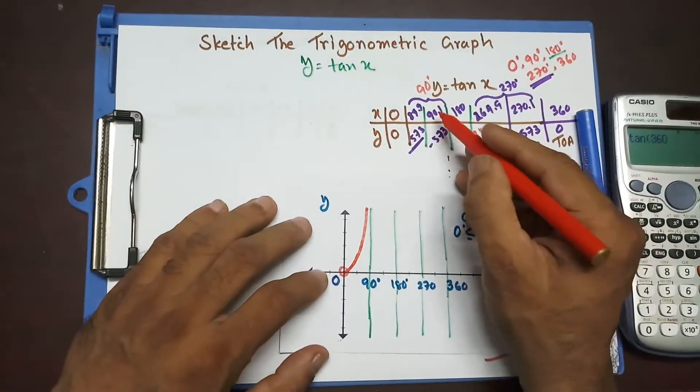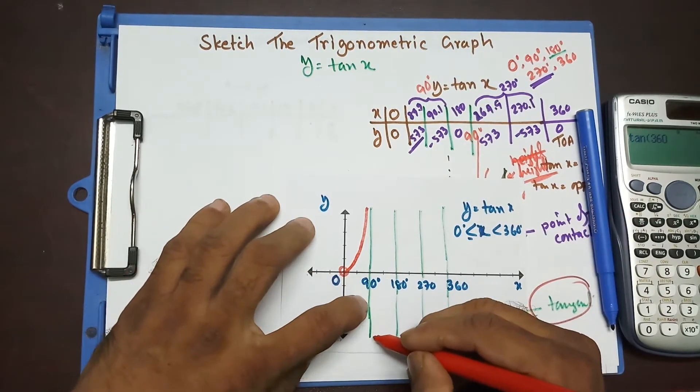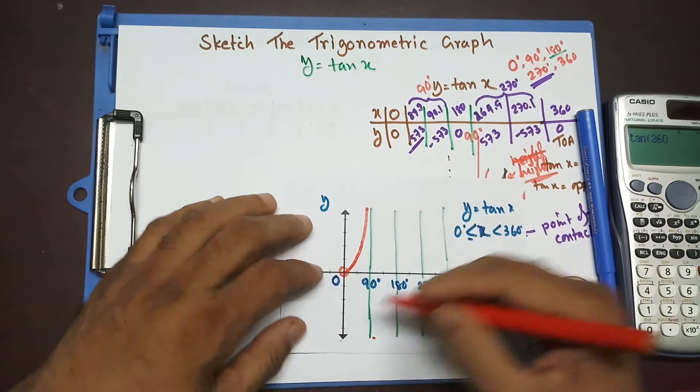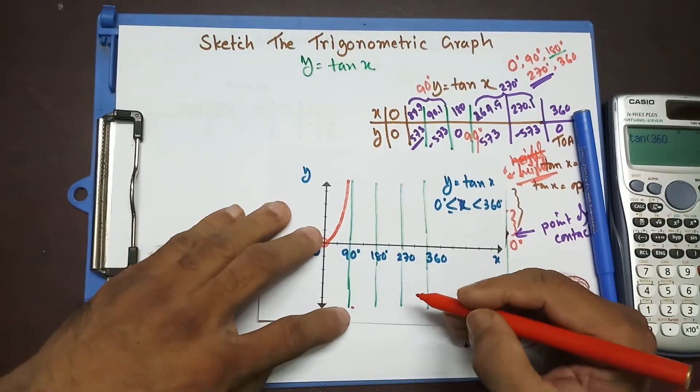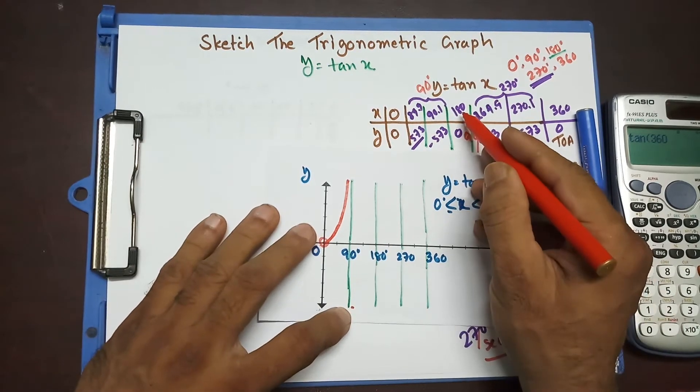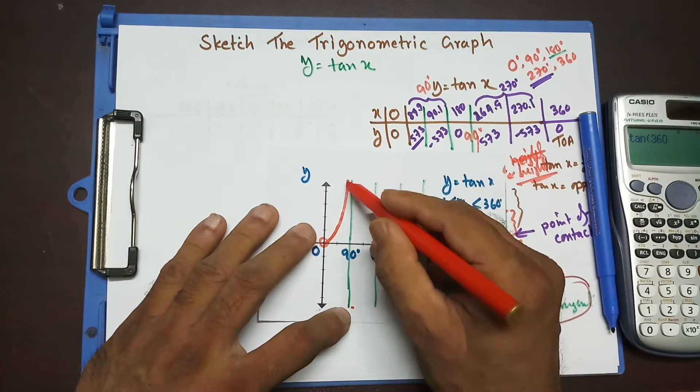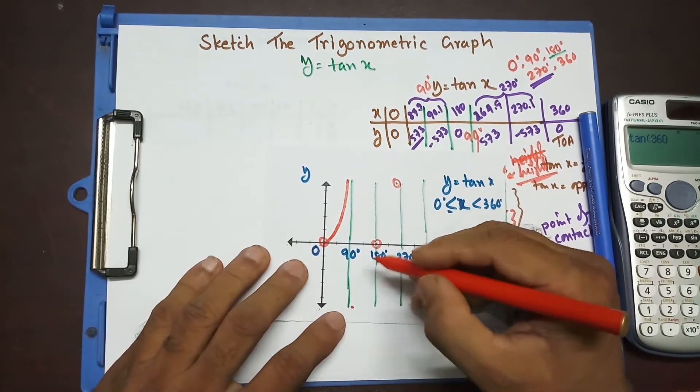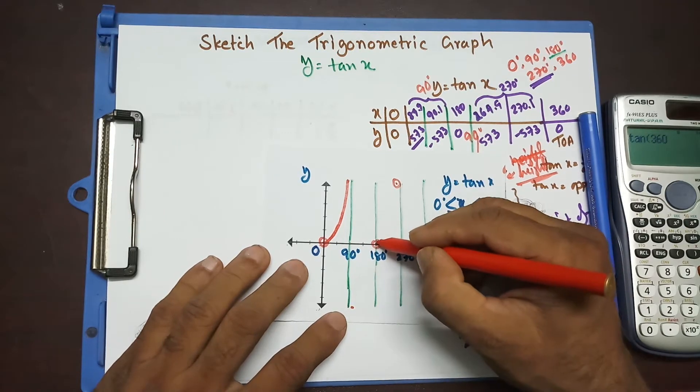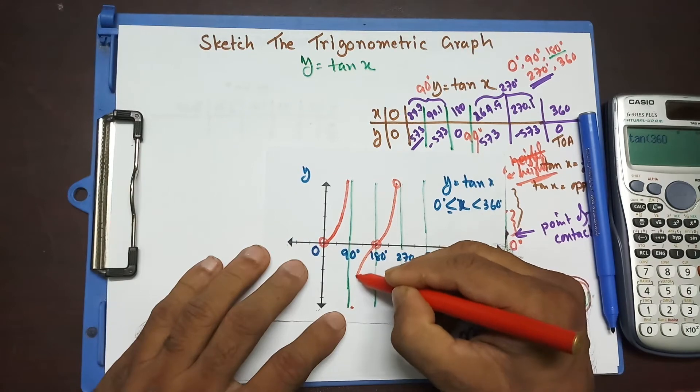Now, for 90.1, it's going to be somewhere close to this 90 line over here because it's negative. y is negative below the x-axis. So, it's going to be somewhere over here. And then, at 180, it's 0. And then, 269, it's 573. So, same rule applies over here. I'm going to put it this place over here. So, that's going to be something like that. And this is going to be something like this.